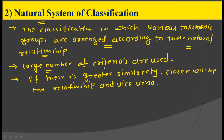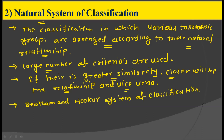If there is greater similarity between living organisms, they can have a closer relationship and can be placed in one taxonomic group. If two living organisms have greater dissimilarity, their relationship will be a distant one. The prime example for the natural system of classification is the Bentham and Hooker system of classification.